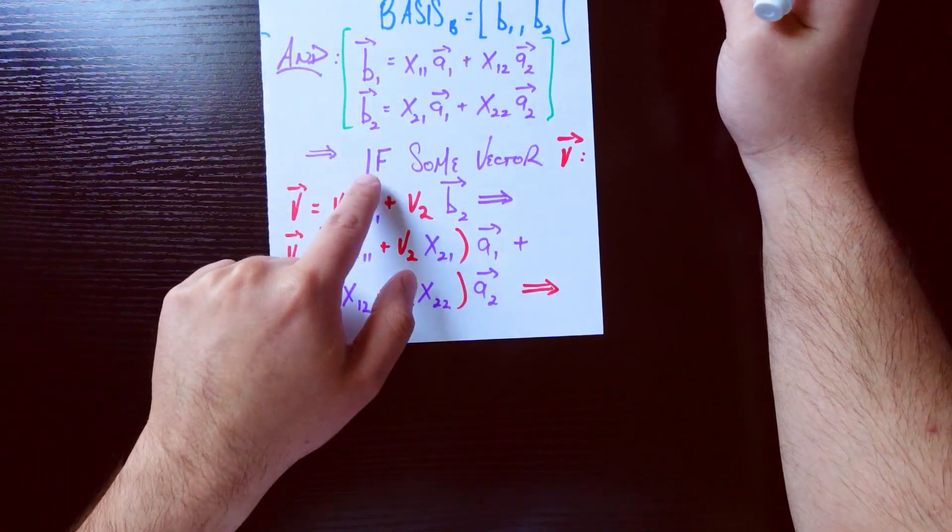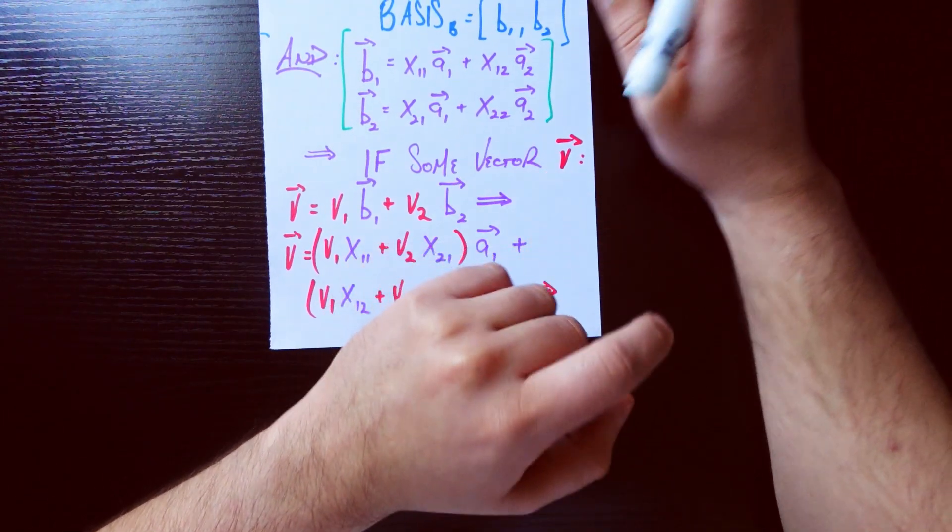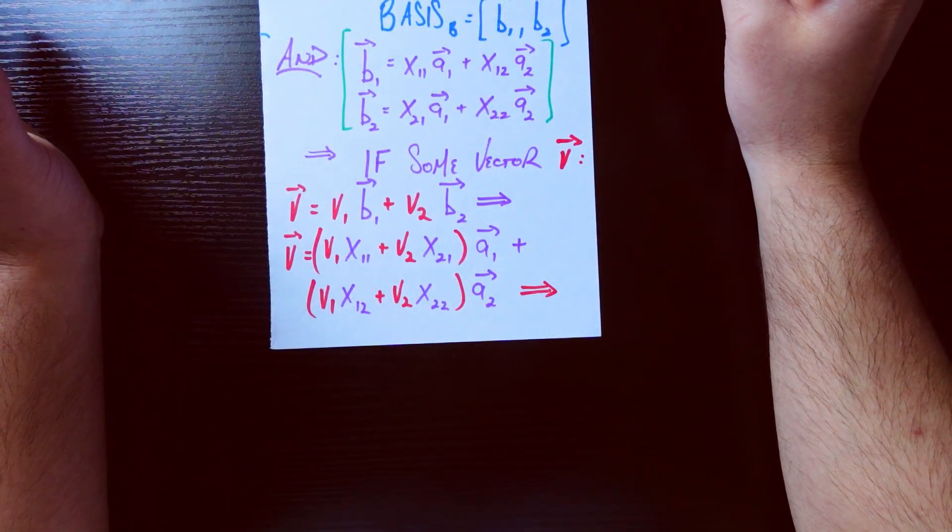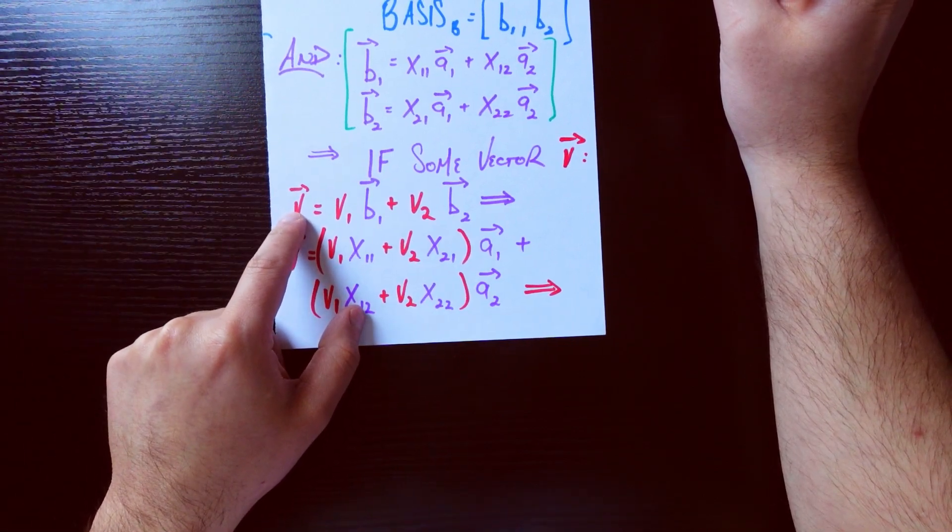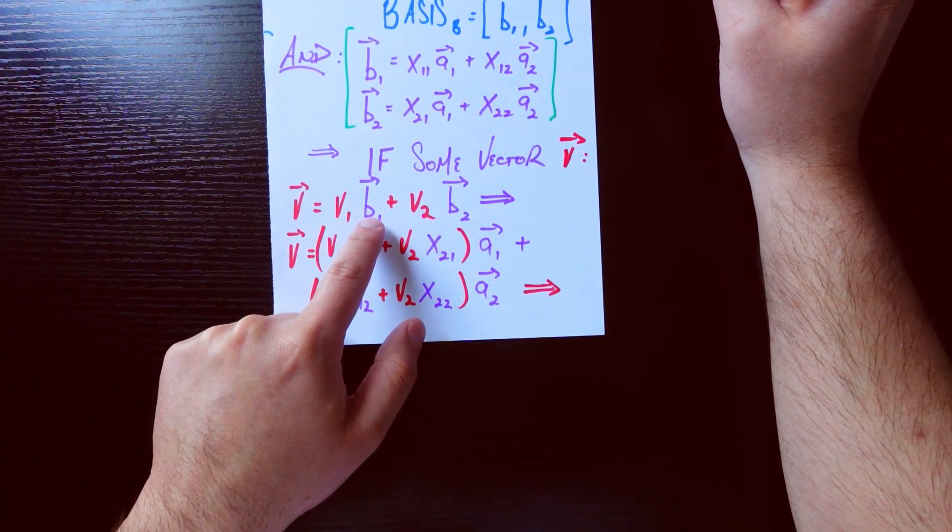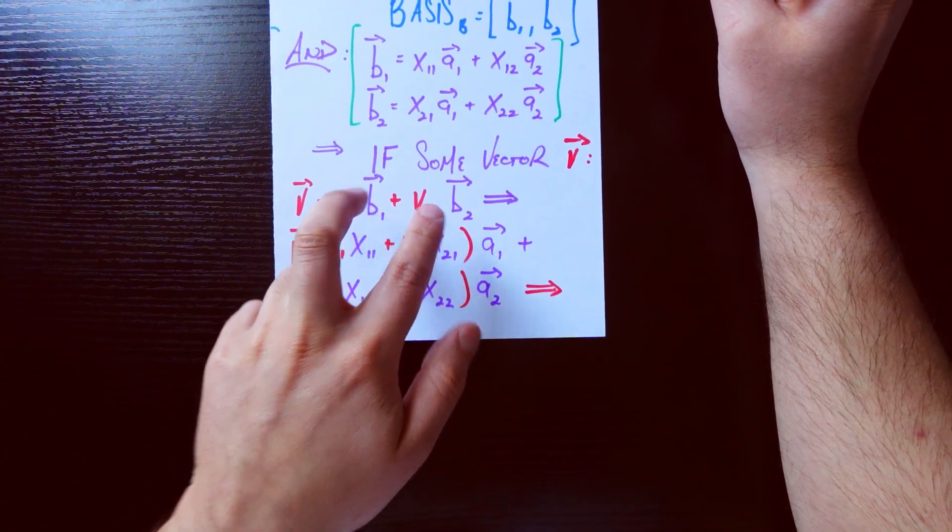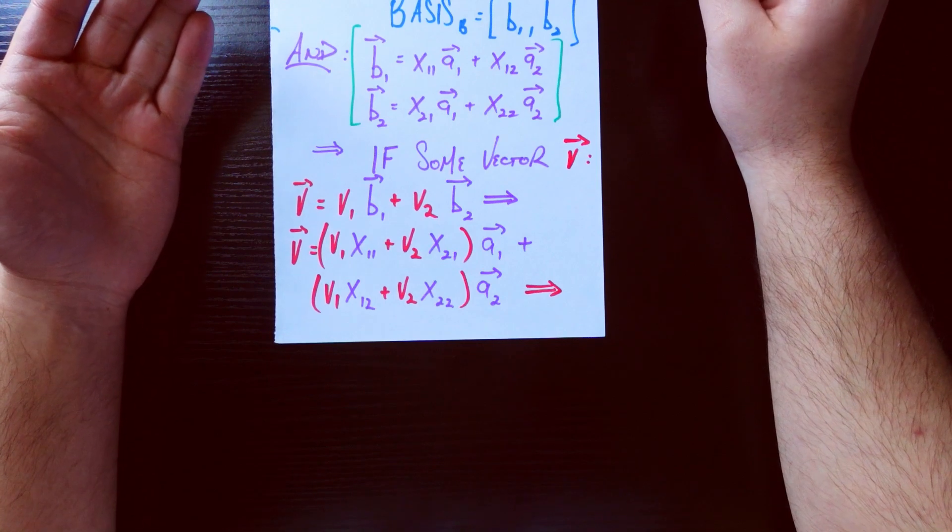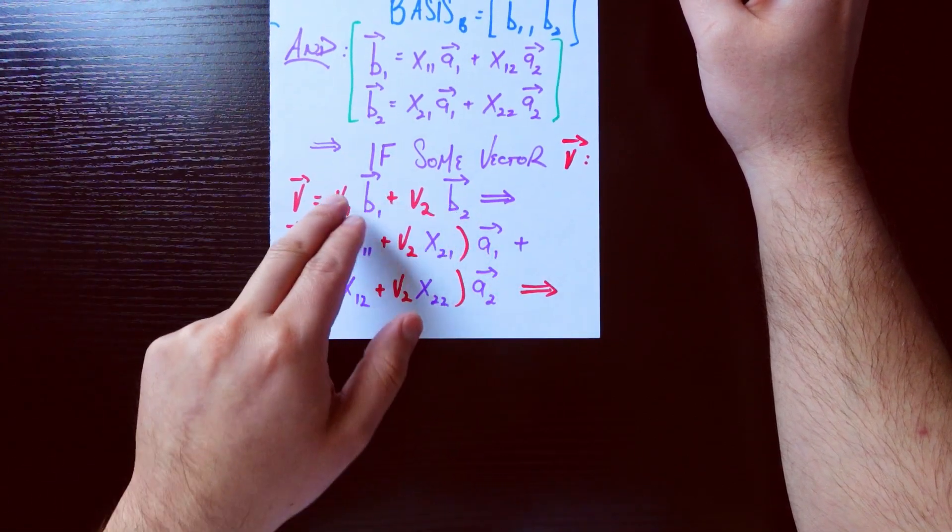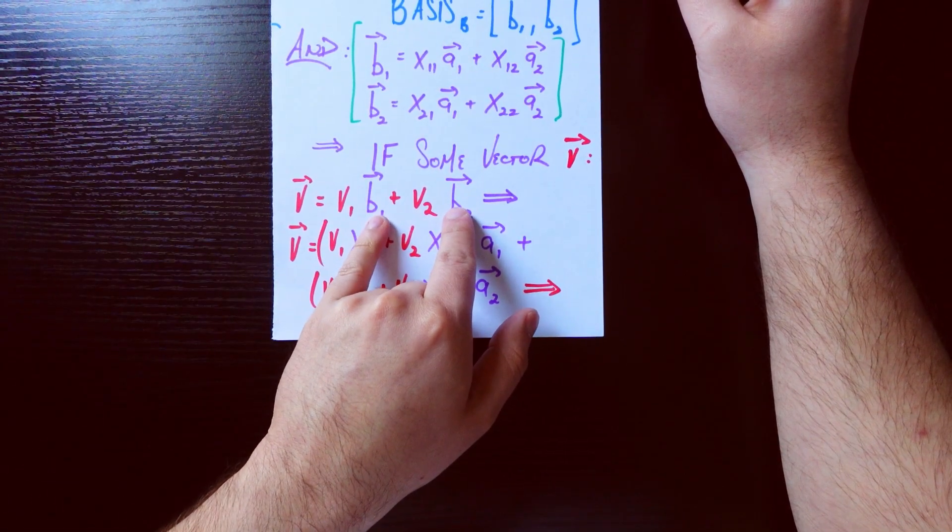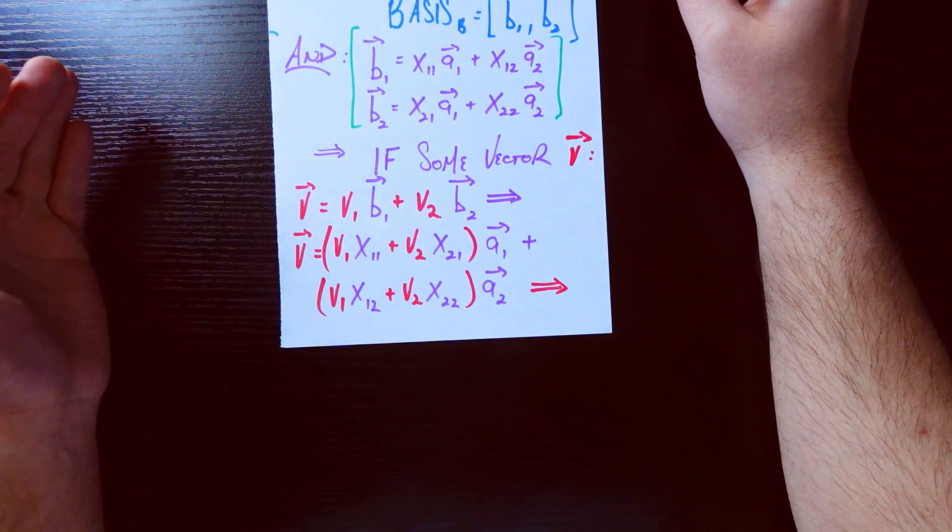So let's say we have some kind of vector v, so v is just some arbitrary vector in the space. And let's say that v can be represented as v1 times basis vector b1 plus v2 times b2. So v1 and v2 here are numbers, coefficients. And this is saying that if we combine the coefficients in this way with these two basis vectors, we get the vector that we currently care about.